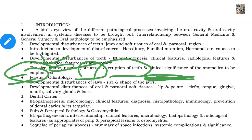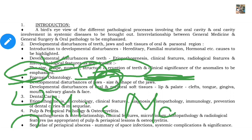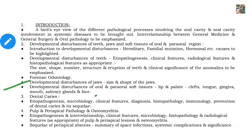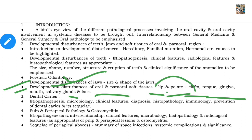Next we learn developmental disturbances of jaw or jaw bones — for example, micrognathia when the jaw is of smaller size. After that, developmental disturbances of oral and para-oral soft tissues like lips, palate, tongue, gingiva, mouth, salivary glands, and face. During the intrauterine developmental phase, disturbances can occur — for example, cleft palate — so you have to learn about these.